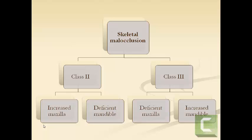Similarly, this differentiation applies to class 3 cases as well. To differentiate whether a class 2 skeletal malocclusion is due to an increased maxilla or a deficient mandible, we have a simple clinical method called the visual treatment objective. This gives a fairly accurate judgment about the underlying problem without the need for a cephalometric analysis, though cephalometrics are always recommended. This procedure will be continued in the next part.